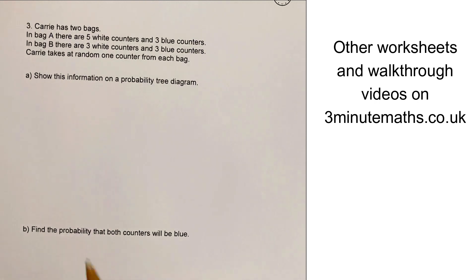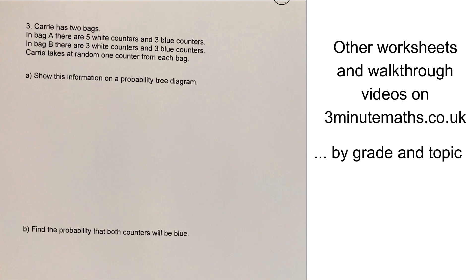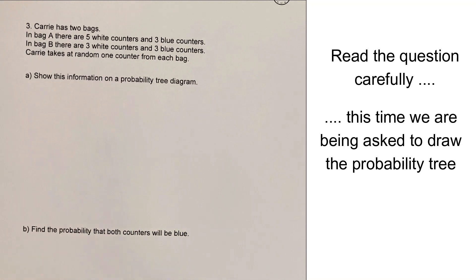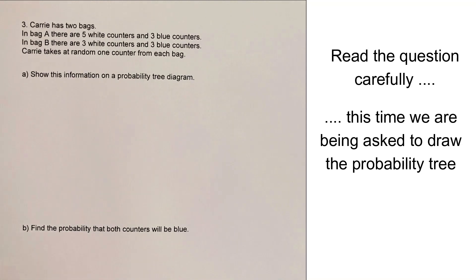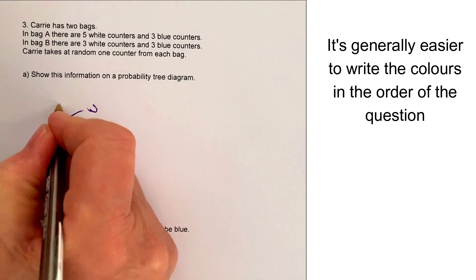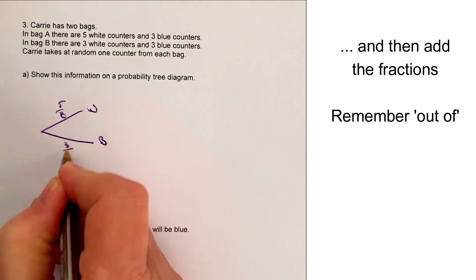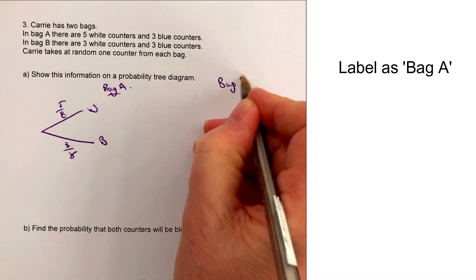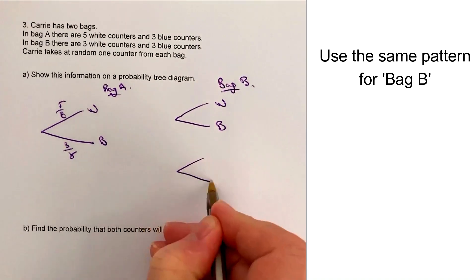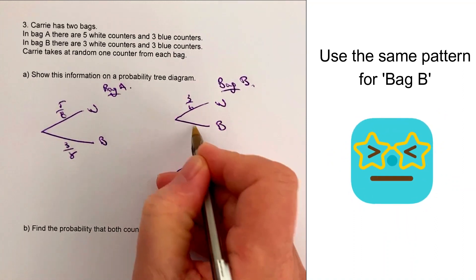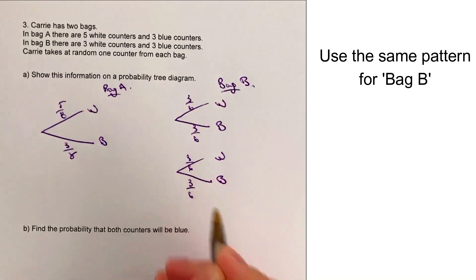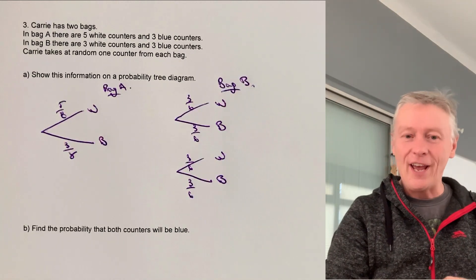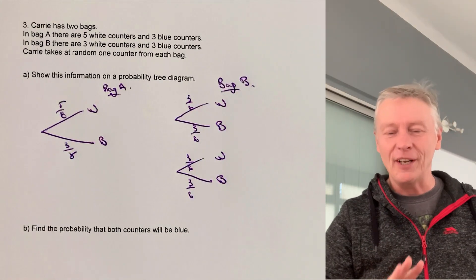In question 3, Carrie has two bags. In bag A there are white and blue counters — 5 out of 8 white and 3 out of 8 blue. In bag B there's also white and blue, just different quantities — 3 out of 6 for each outcome. Because this is a probability tree, it looks at the probabilities in isolation.